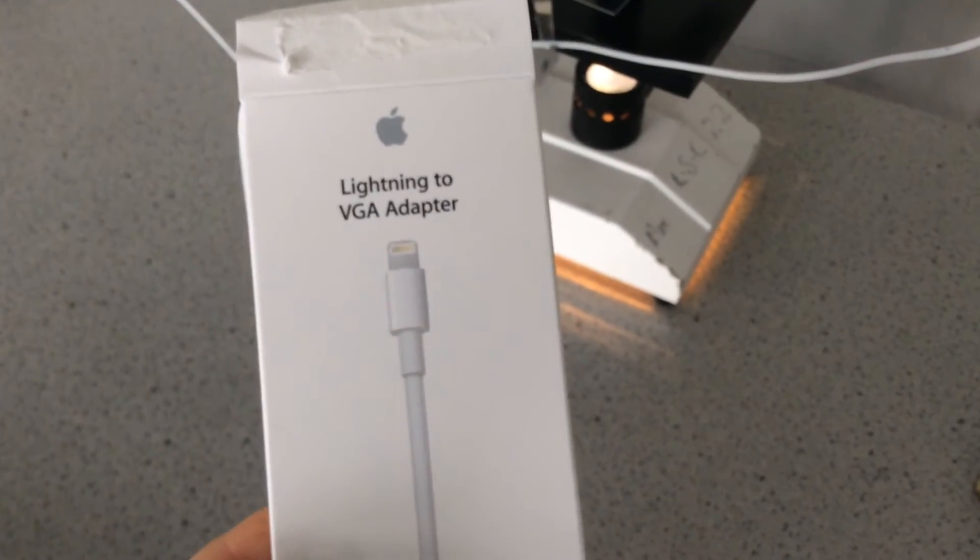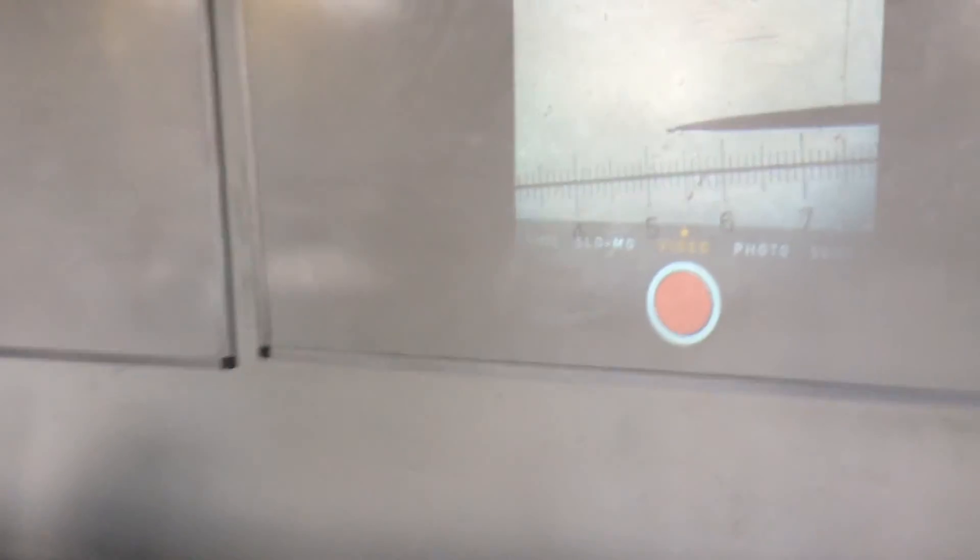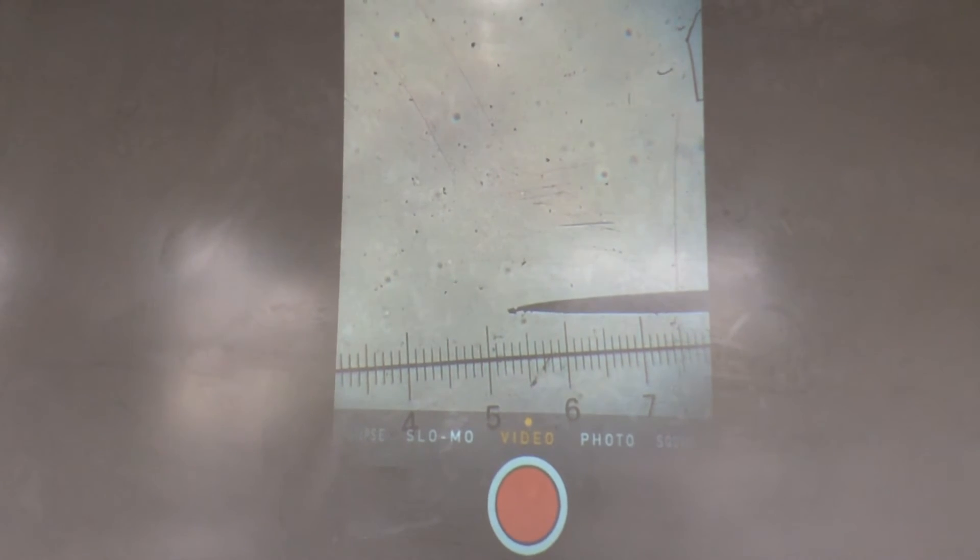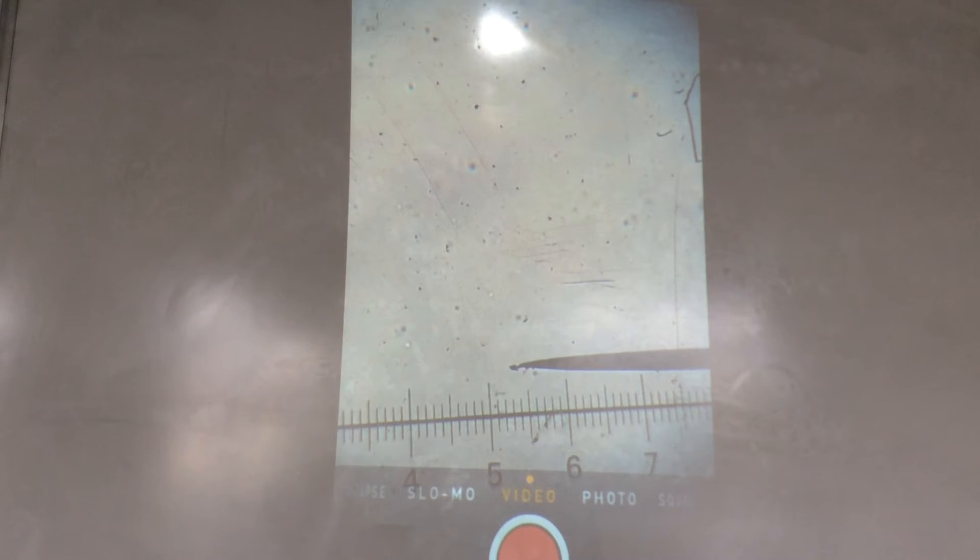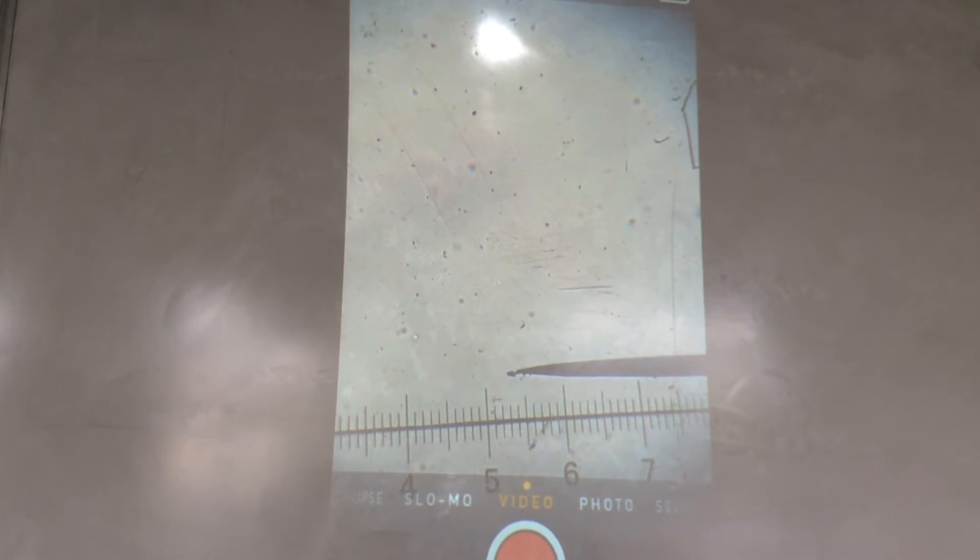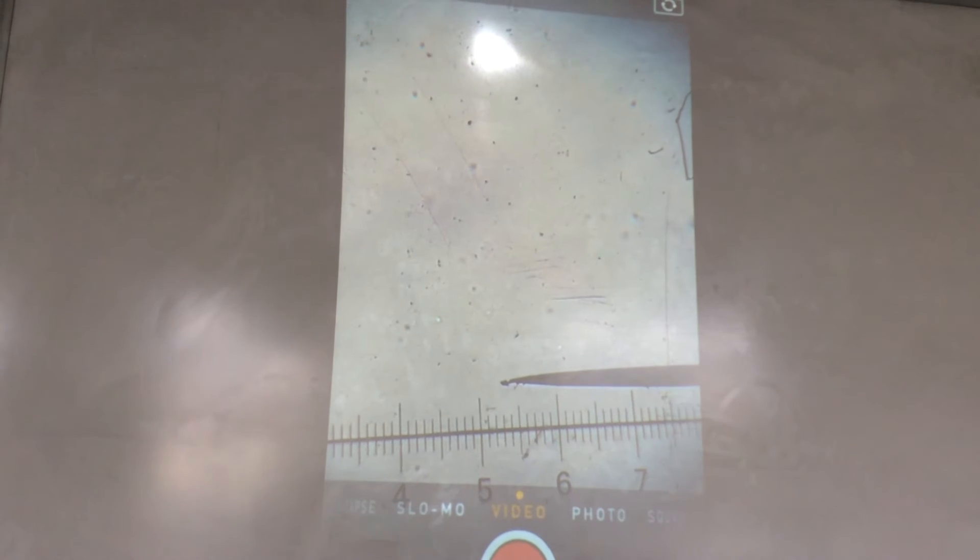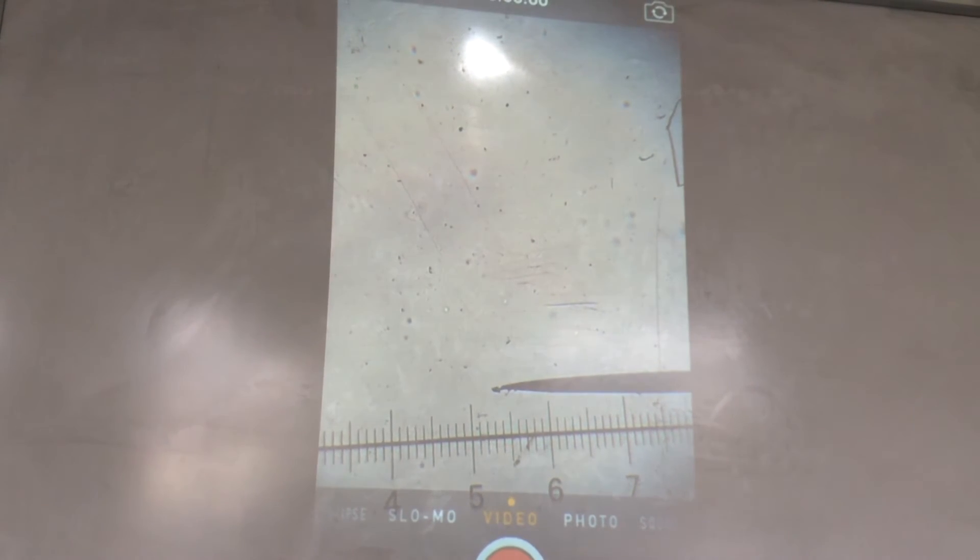If you get yourself one of these lightning to VGA adapter or the equivalent for an Android phone, get your phone up to a projector and then you can observe Brownian motion on the big screen. So there they are those little globules of fat moving randomly and jerkily. Great demonstration for the class.